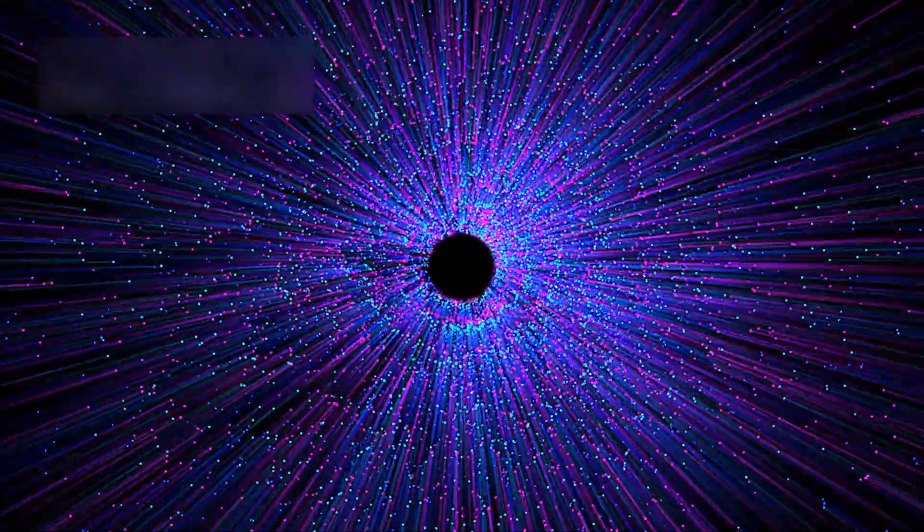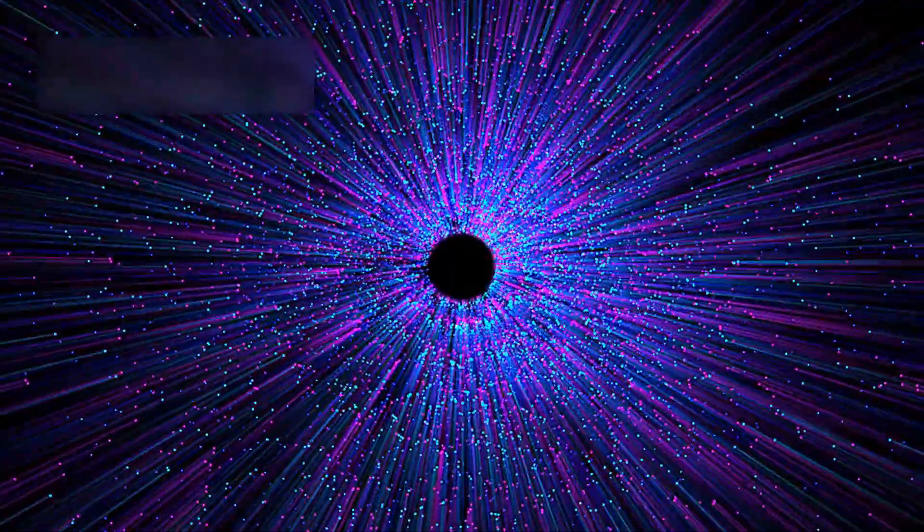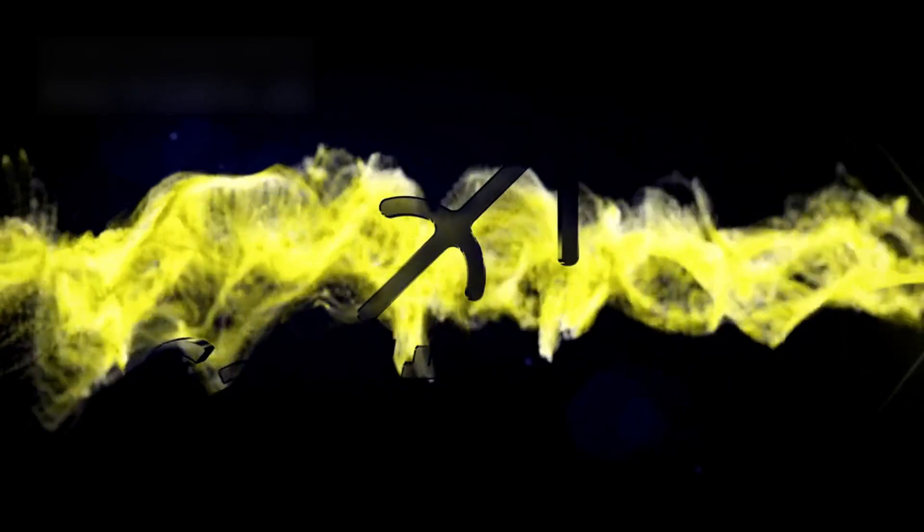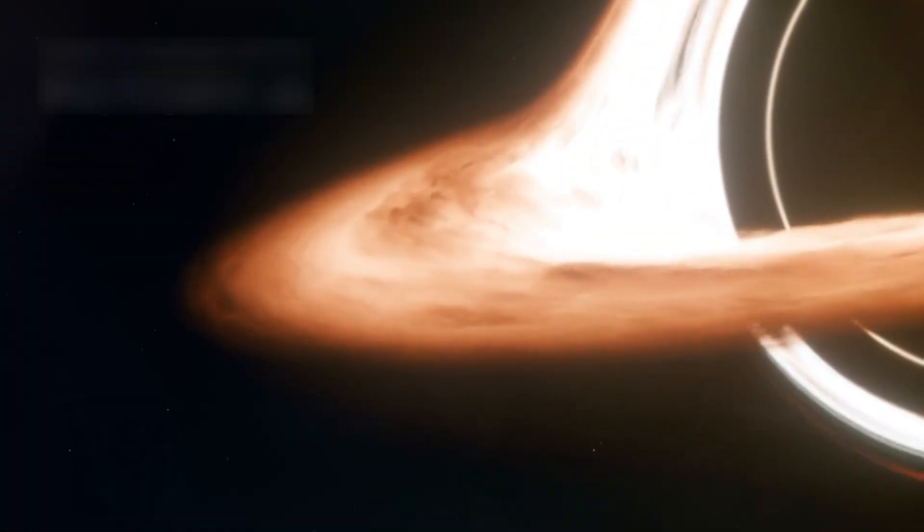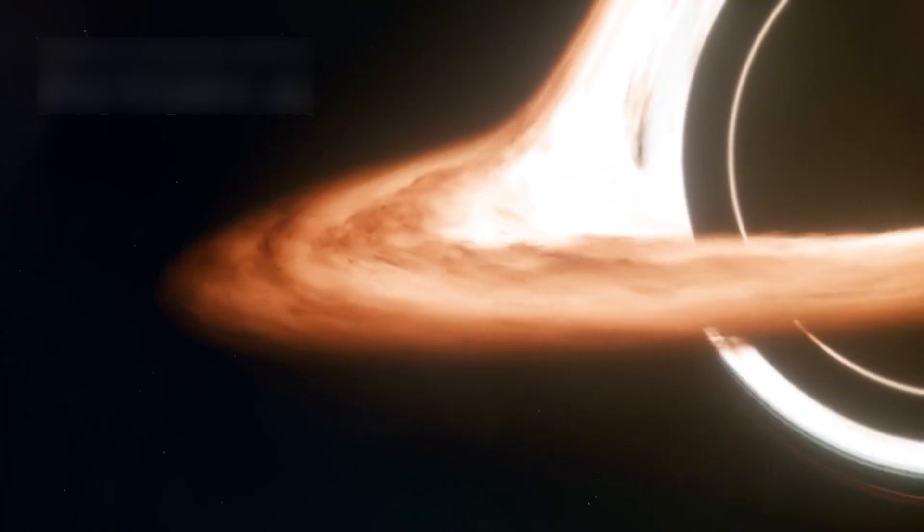Some black holes have jets of particles shooting at nearly light speed. Sagittarius A holds 4 million solar masses, while others reach billions. In 2019, the Event Horizon Telescope imaged a black hole's shadow.